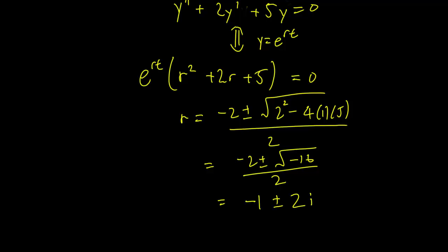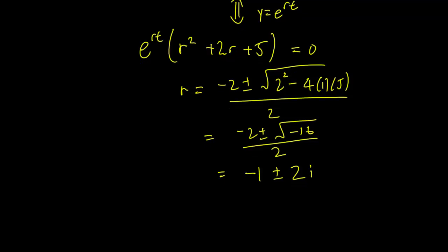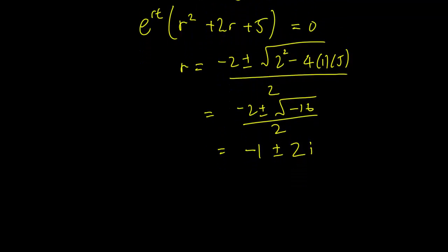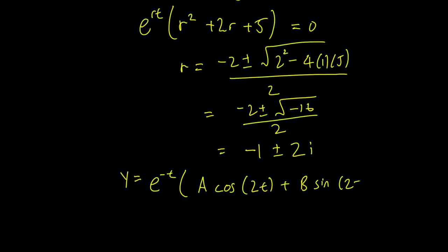This gives us negative 2 plus or minus the square root of negative 16, all over 2, which simplifies to r equals negative 1 plus or minus 2i. This means our general solution is y equals e^{-t} times a cosine 2t plus b sine 2t. This is our general solution for y.